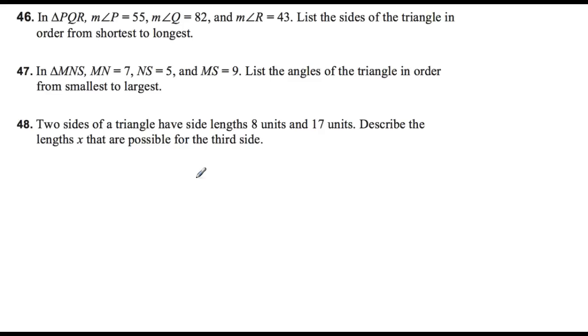Alright, number 46. It says in triangle PQR, the measure of P is 55, Q is 82, and R is 43. List the size of the triangle in order from shortest to longest. Once again, you can do that. But you need to draw your own triangle. So you'll need to draw out the triangle and put your angles in there and label them. And you can do that. It's just like the last one. You just have to draw it.